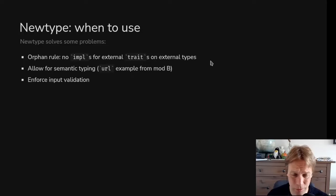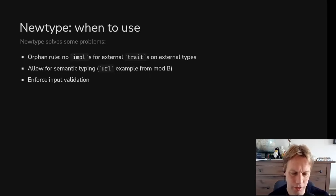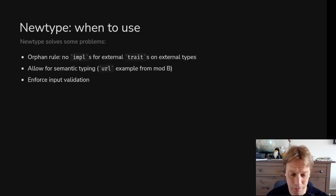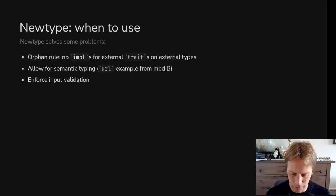And then there's also the orphan rule — you can't implement a trait unless either the trait or the structure you're implementing it for is in your crate. If you've got a struct in some other crate and a trait in some other crate, neither of which belong to you, and you want something that implements that trait on that struct, what you need to do is wrap that struct in a new type. Now you own the wrapper, and you can implement the trait on your new type. That's the way of working around the orphan rule. The reason that's okay is because no one could confuse it with someone else who'd done the same thing in their crate, because they would have wrapped it with a different wrapper.